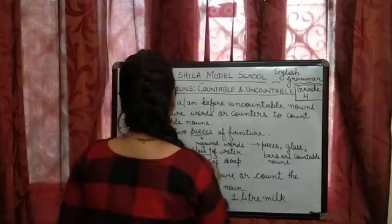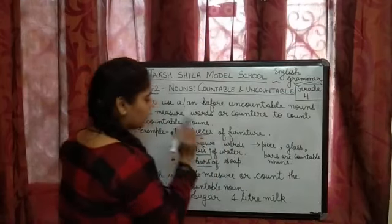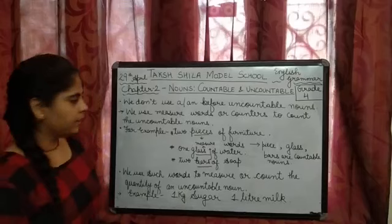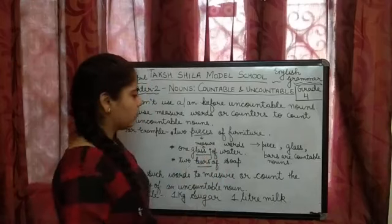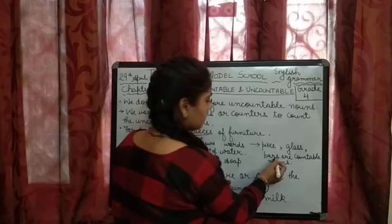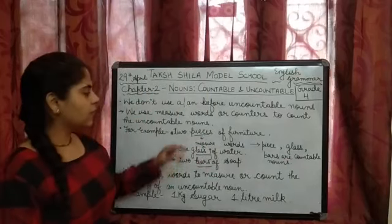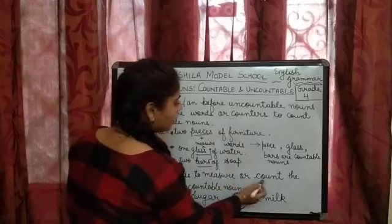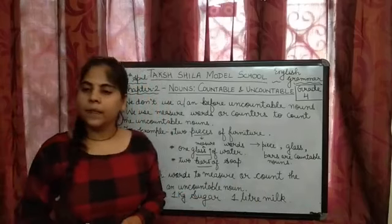Two pieces of furniture, one glass of water, two bars of soap. So pieces, glass, bars are called measure words. When we use these measure words with uncountable nouns, they are known as counters or measurable words. Generally, piece, glass, bars are countable nouns — but when we use these words before uncountable nouns, they become measure words. We use such words to measure or count the quantity of an uncountable noun.